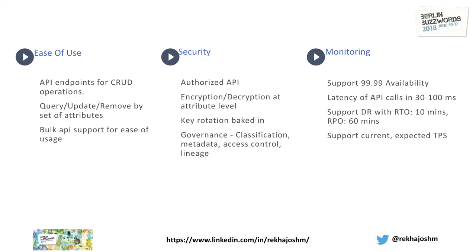As soon as you talk about scale, you are thinking of everything — security: data is actually encrypted and decrypted, which creates latency. You have to have keys that are rotating, and rotation should be baked in. Governance is very important — how you are classifying, controlling, and tracking the lineage of the data. Ease of use is very important: no matter how wonderful the things you are developing, if it is not easy to use, no user is going to use it. And how can query, update, and remove operations happen efficiently?